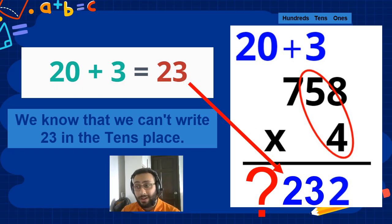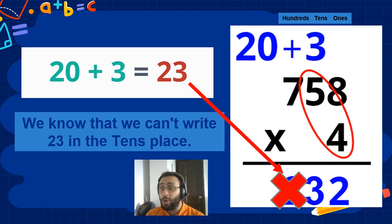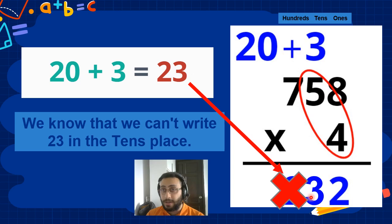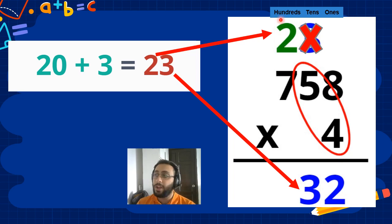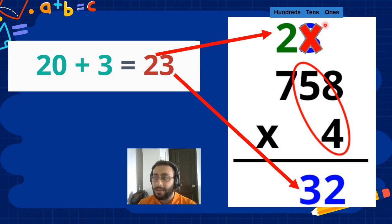Can we write 23 here? No! We can write the 3 here, yes. But the 2, we have to carry it to the next digit, which is the hundreds. I recommend you to cross this one so you don't use it again.